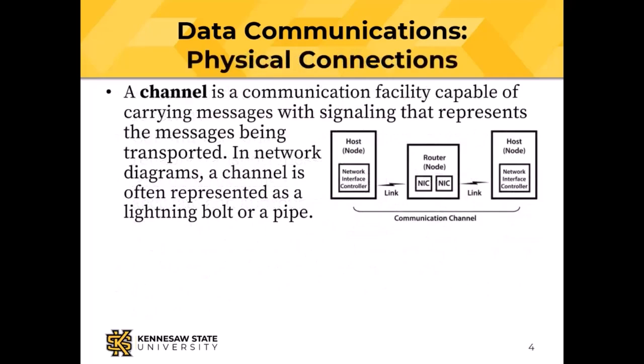There's a physical connection. The channel is the communications facility that carries messages — we often represent it with a lightning bolt, a pipe, or a cloud. A communications channel includes a host computer with a network interface controller, a link that could be radio, fiber optic, wire, or infrared, a router that's a node but not a host with two network interface controllers, and another host at the other end.